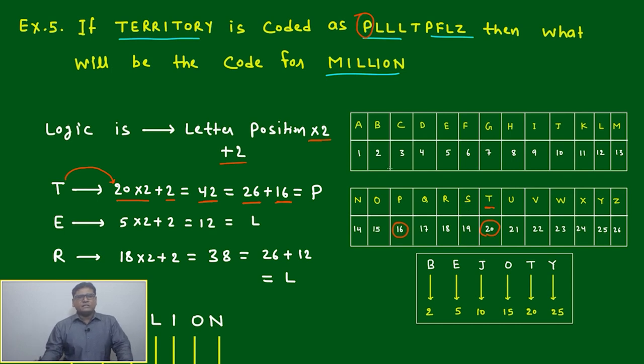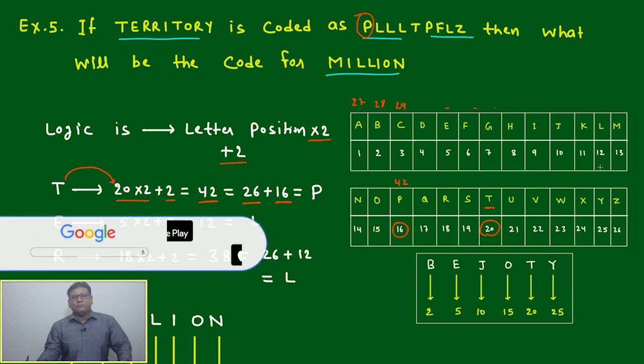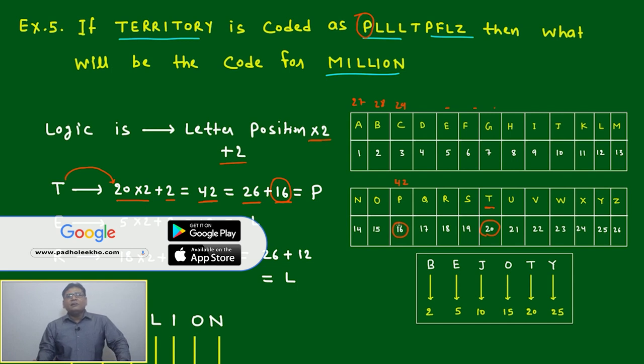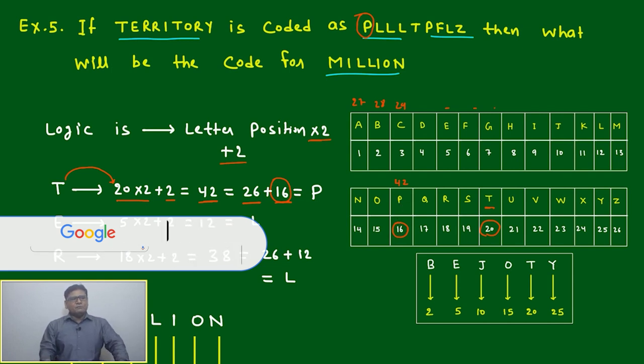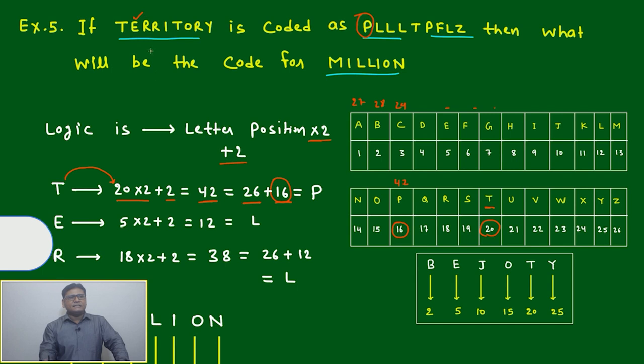You can just mark like this: 27, 28, 29, and so on. Finally, you will find 42 will come here. Or after 26, you can restart again: 1, 2, 3. How much you have to count further? 16 you have to count, and the 16th alphabet will be P. Similar logic for the next alphabet, E. E is at position 5.